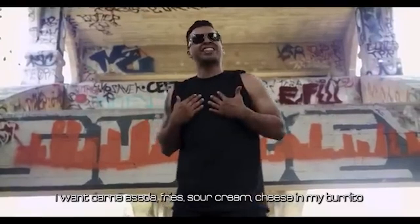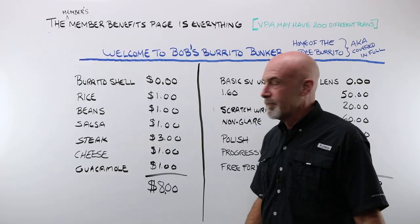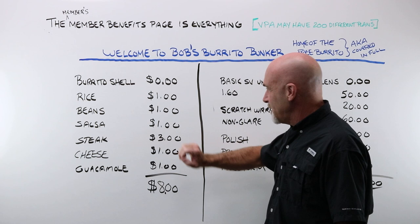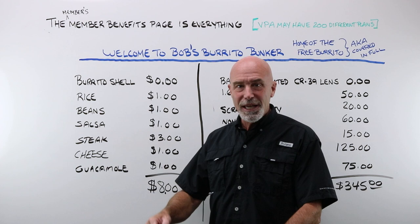Rice, a dollar. Beans, a dollar. Salsa, a dollar. Steak, three dollars. Cheese, a dollar. Guacamole, a dollar. You get to the end of the counter, and your burrito shell — which was free, covered in full — is now eight dollars.